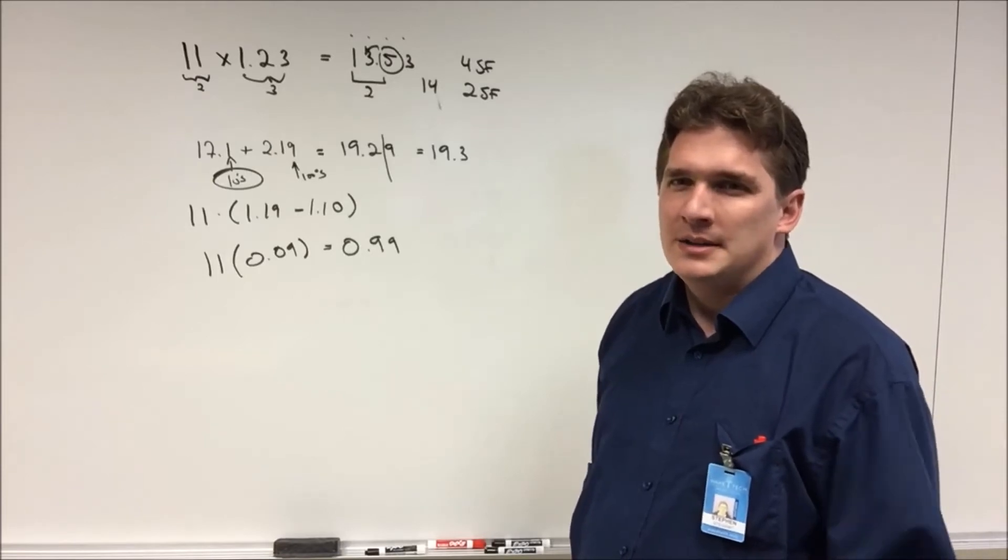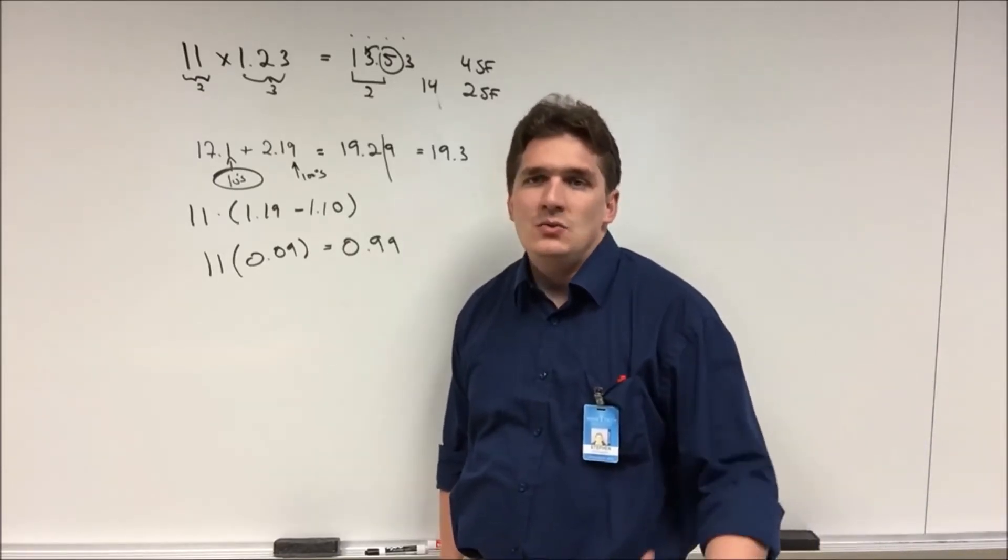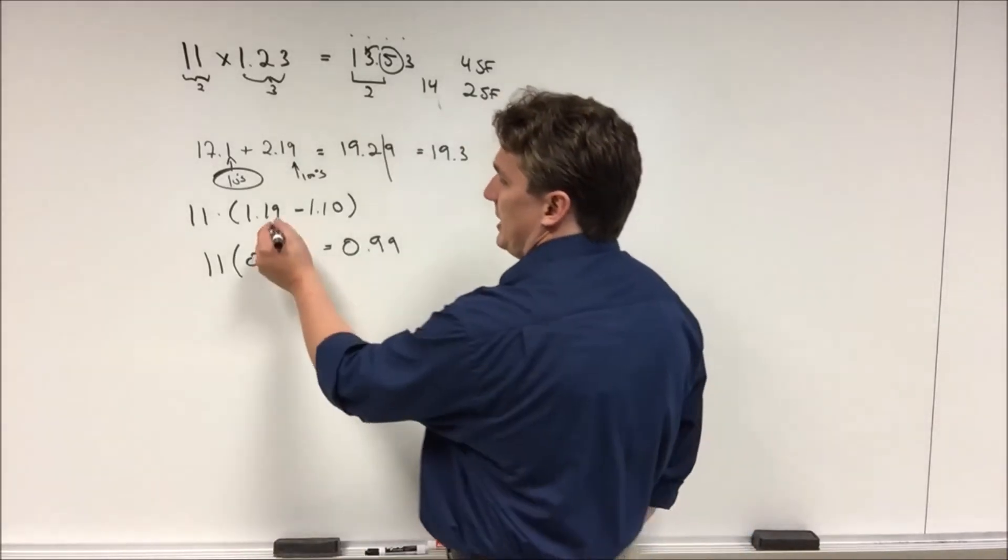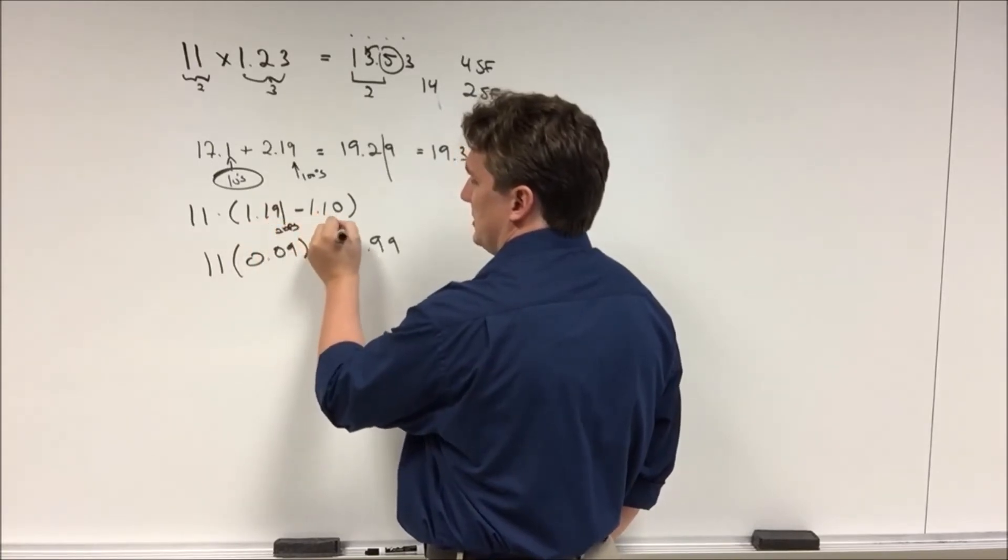Here's kind of where it gets a little fuzzy as to how to do significant figures. So let's say you want to look at sig figs for each arithmetic step. So here we have two decimal points and two decimal points.